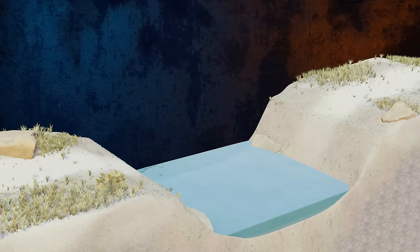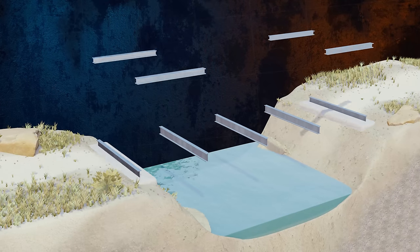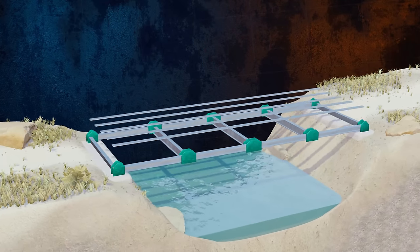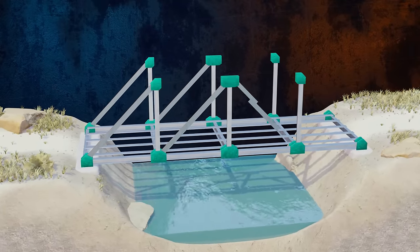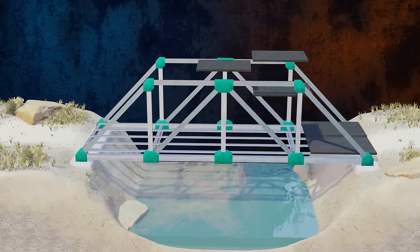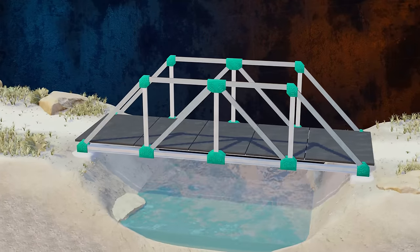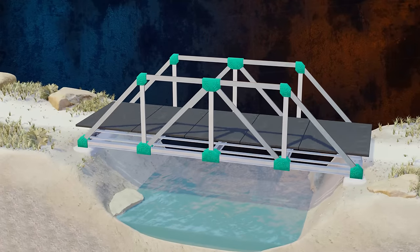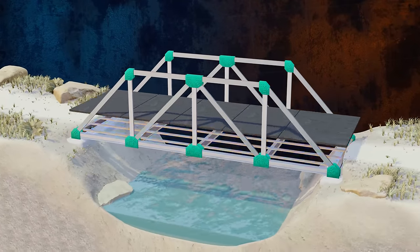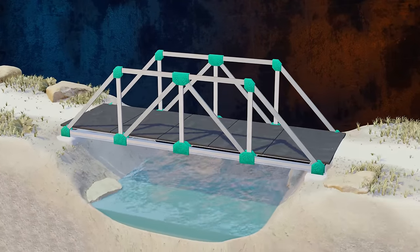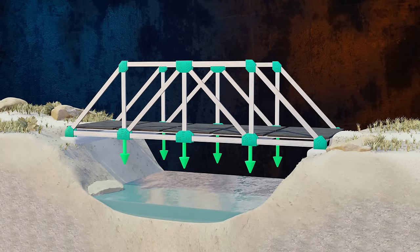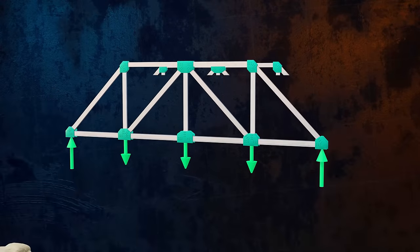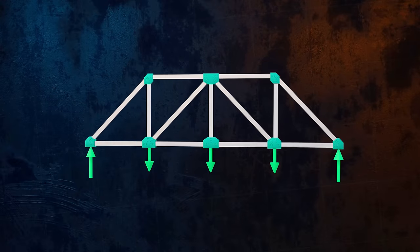Even seemingly three-dimensional structures can often be analyzed as planar trusses. Take a look at this bridge for example. The loads are transmitted from the horizontal floor beams to the two vertical trusses on each side of the bridge. Each of these trusses only carries loads acting in its plane, and so we can analyze it as a two-dimensional structure.